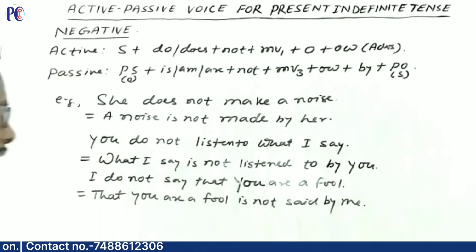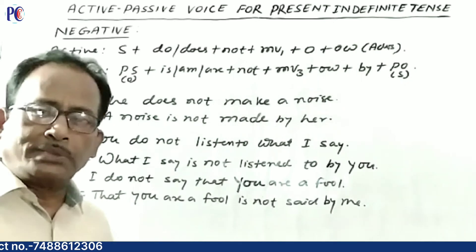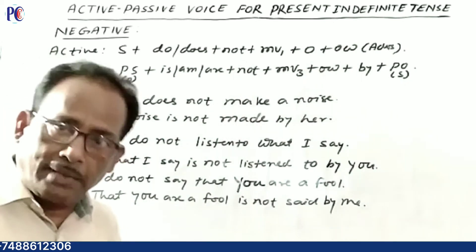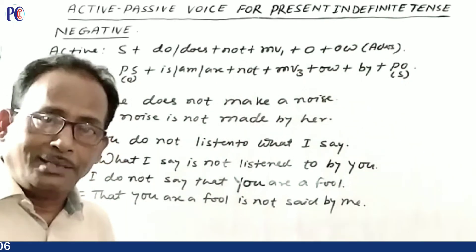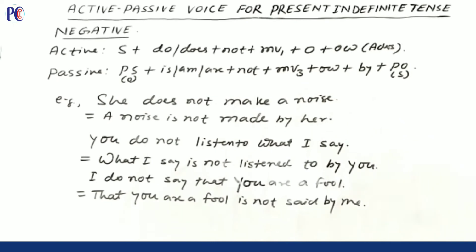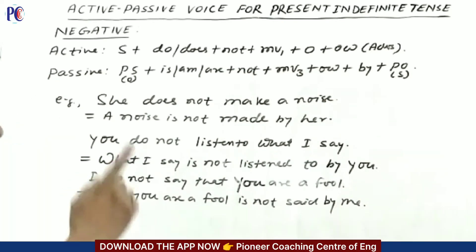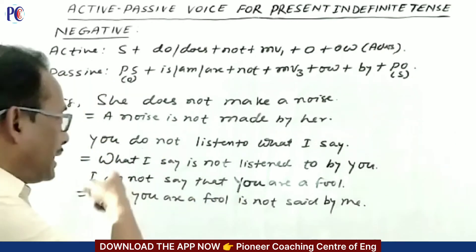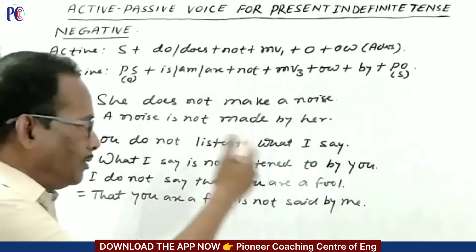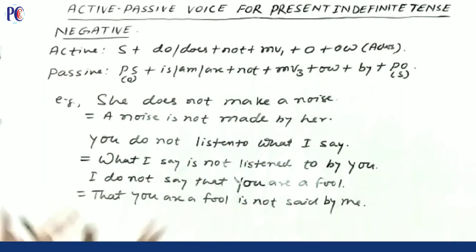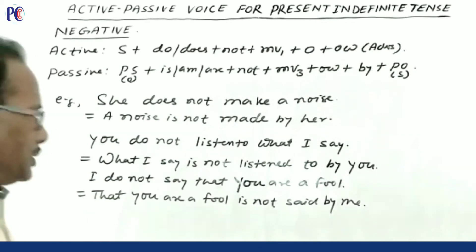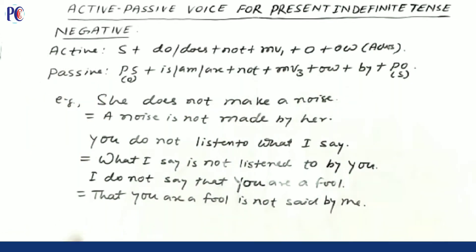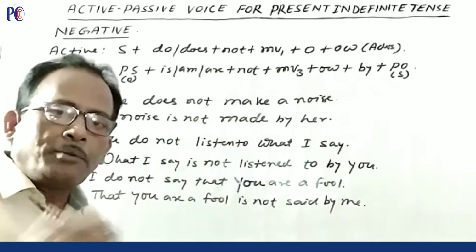Next example: 'You do not listen to what I say.' The object is 'what I say' — it is the object of the preposition 'to'. Make 'what I say' the passive subject and leave the preposition in its place. So: 'What I say is not listened to by you.'